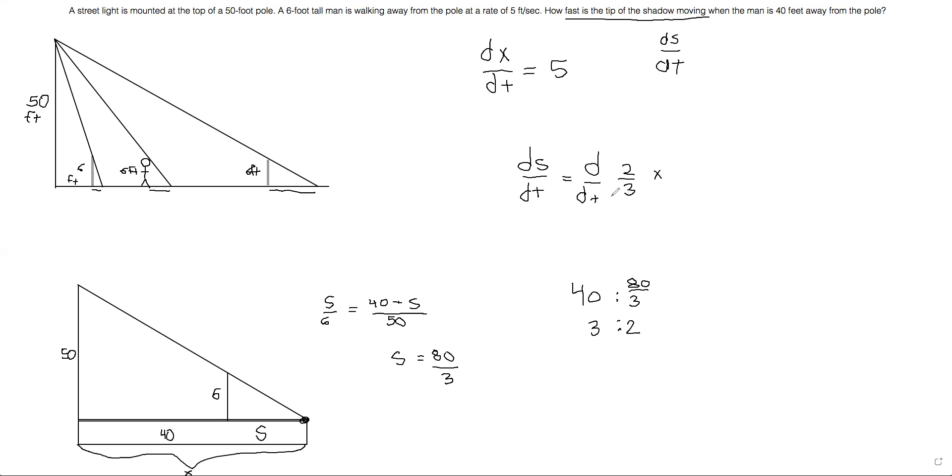So ds/dt is what we're trying to find. What we want to do now is we want to just solve this differential equation. We already have it in the form we want. We're trying to solve for ds/dt. So let's go ahead and just solve for it now. What we get is ds/dt equals two thirds. We can always move a constant outside of a derivative without any effect on the answer. So this is going to be two thirds dx/dt. And I think we already know dx/dt. X is just the distance between the man and the pole. So dx/dt is actually going to be five. We've already given that information.